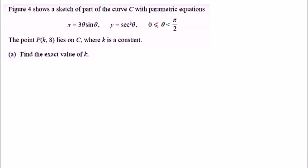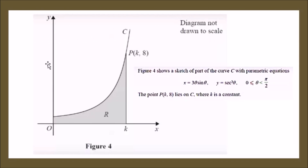Here we go — Question 8, the final question of the paper. It tells us that Figure 4 shows a sketch of part of the curve C with parametric equations. The point P at (k, 8) lies on C, where k is a constant. Figure 4 looks like this — here is curve C, and we can see the point P at (k, 8) is over here, so when x equals k and y equals 8.